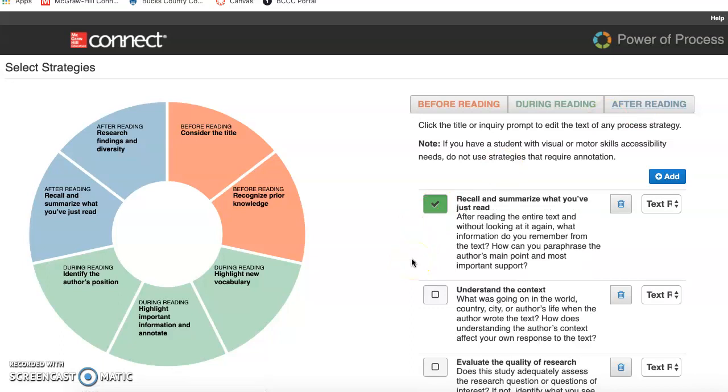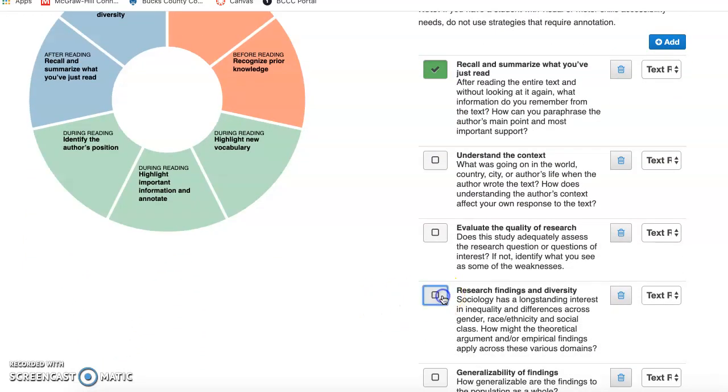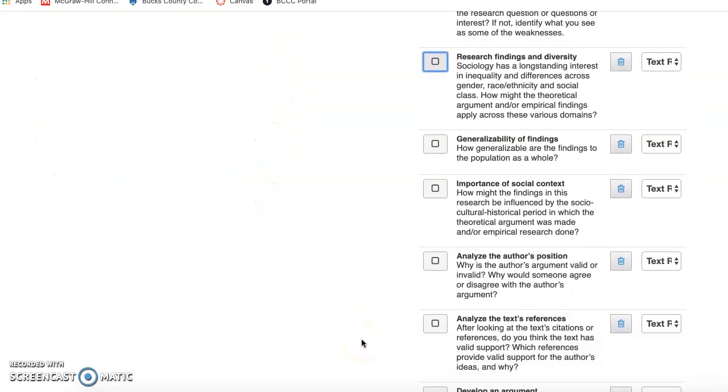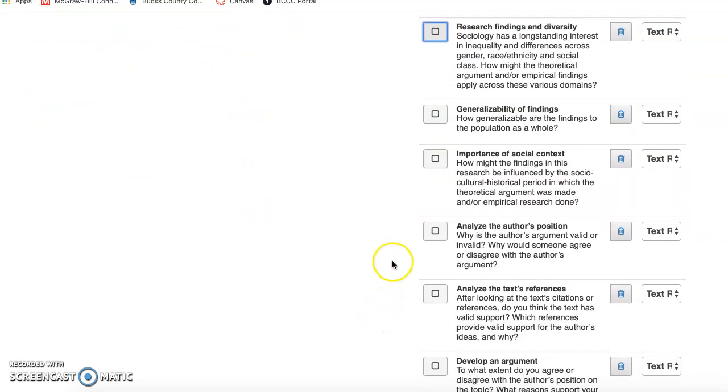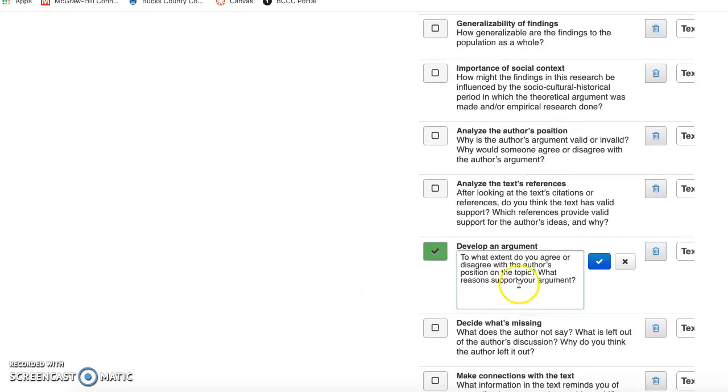After reading, I'm going to ask my students to recall and summarize what they've just read. I'm going to uncheck research findings and diversity because I want them to develop an argument. And if you put in here, develop an argument, and then if you click on the actual thing, you'll see that you could actually add your own criteria if you want something more specific.